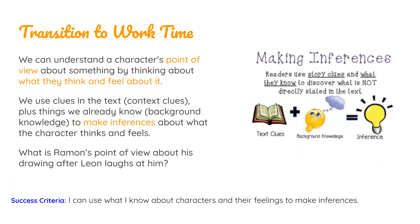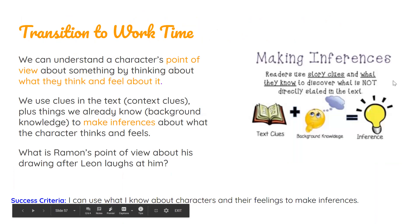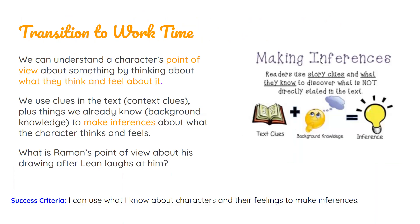We can understand a character's point of view about something when we think about what they are feeling. Over here, you can see an image that shows us how to make inferences. Readers use story clues — I call them context clues — and what they know to discover what is not directly stated in the text. So we can use context clues and background knowledge to make inferences. When we put together the context clues and the background knowledge, we get more information.